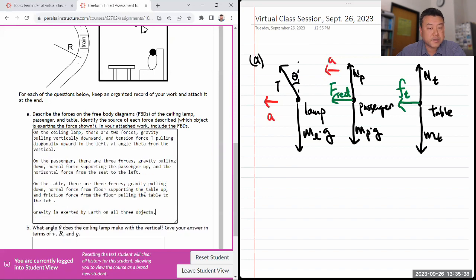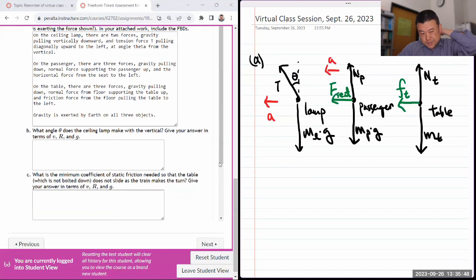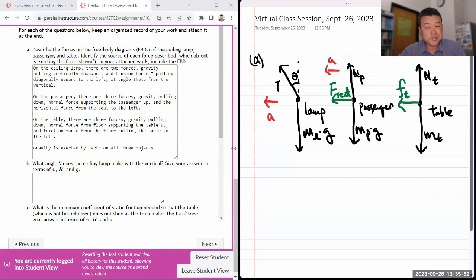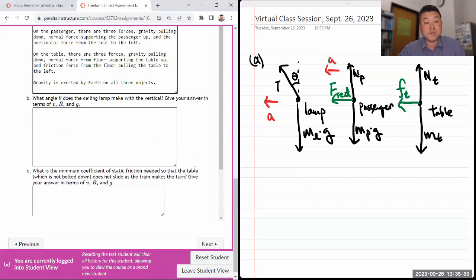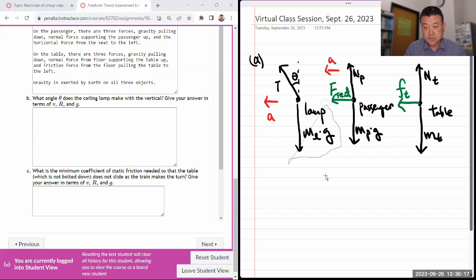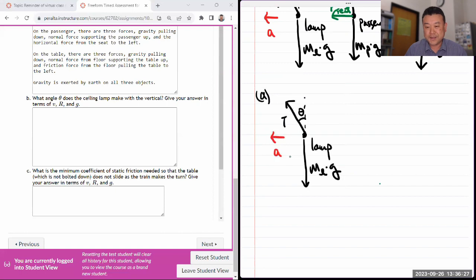When you write this description, imagine you are writing a written word description of your free body diagram for someone who's blind. That's exactly how I want you to describe it because the limitation is that this answer box doesn't allow you to attach an image, and I want the work that you'll be attaching to be associated with something you submitted within the 20 minute time limit.